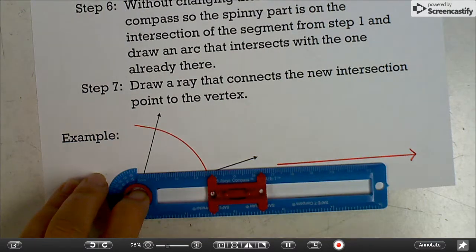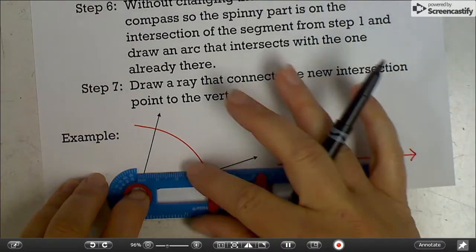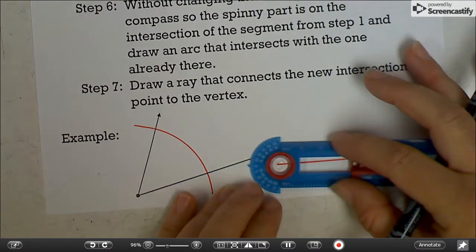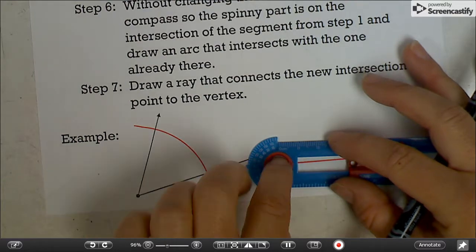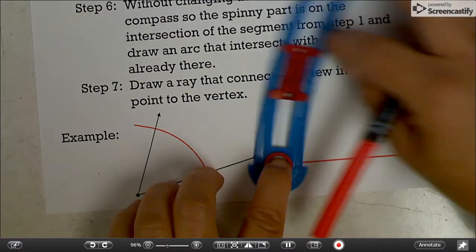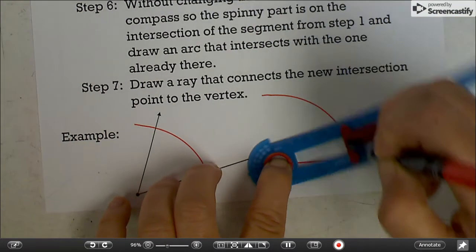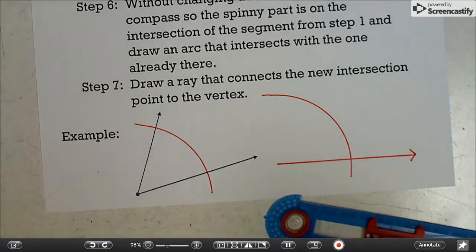Then you're going to go to your new angle. And you're going to put the spinner on what will be the vertex or the endpoint of the new segment. And you're going to draw the same arc. So I didn't change the radius at all that time.